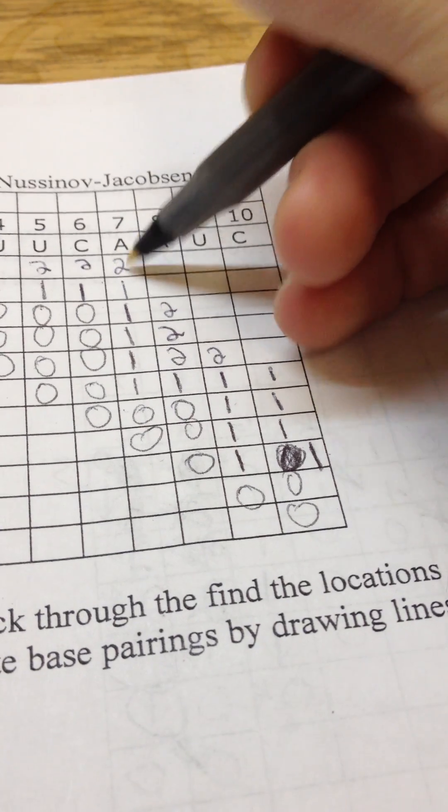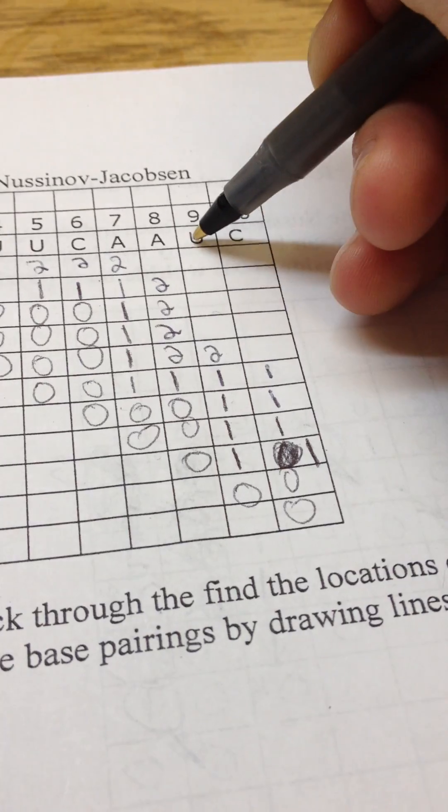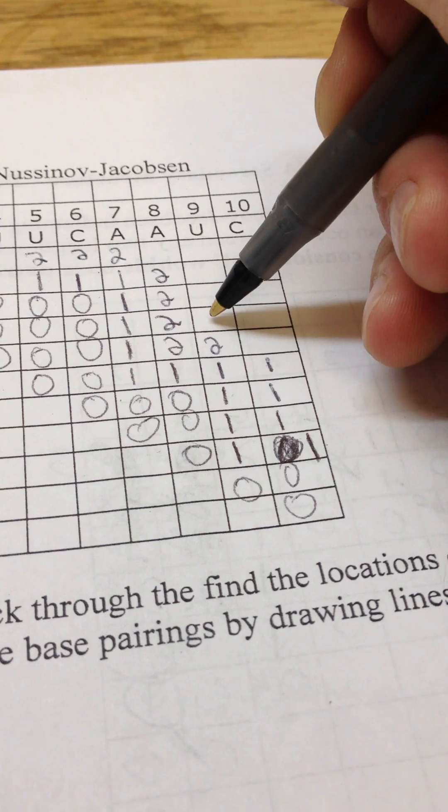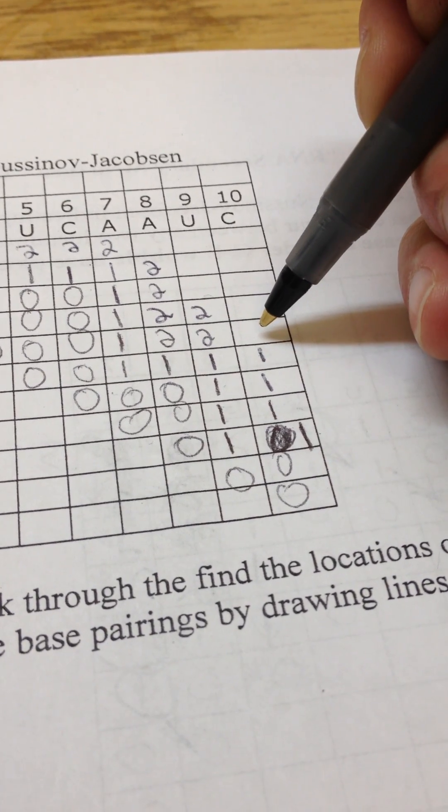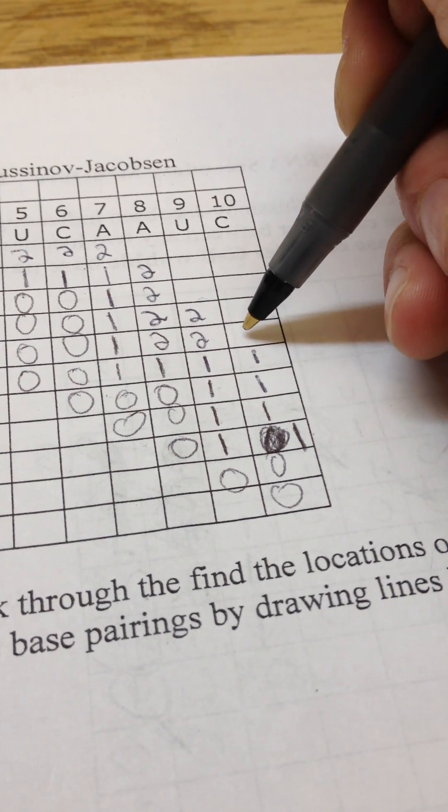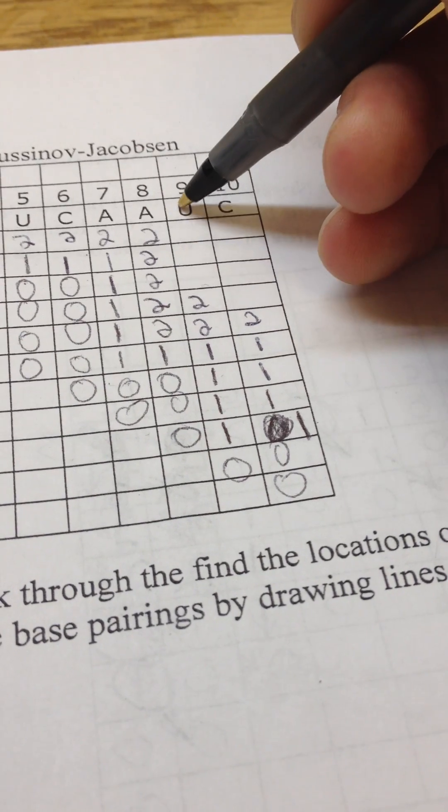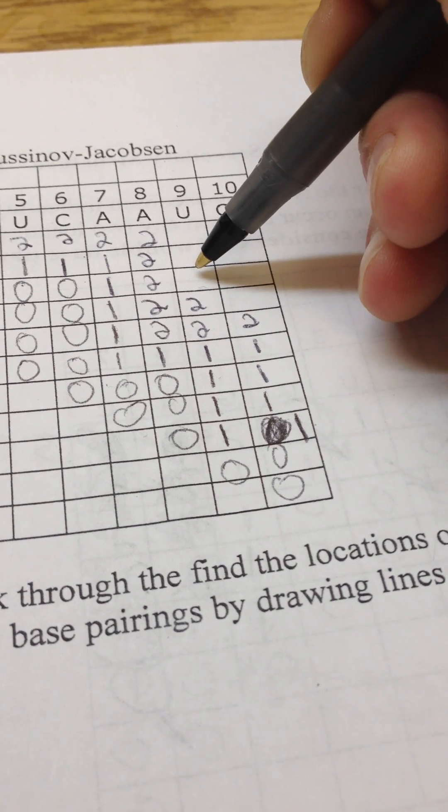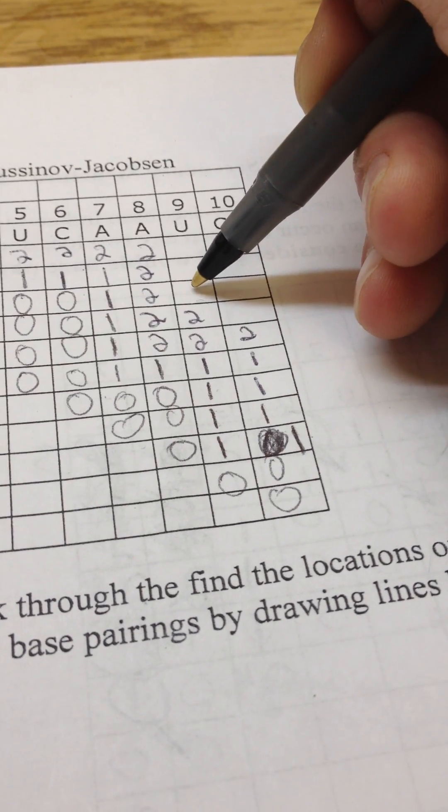U to C does not match, but we have two's around. A to A doesn't match, so we'll take a two. A to A doesn't match, so we'll take a two. A to C does not match, so we'll take a two. A to C does not match, so we take a two. A to C does not match, so that becomes a two.